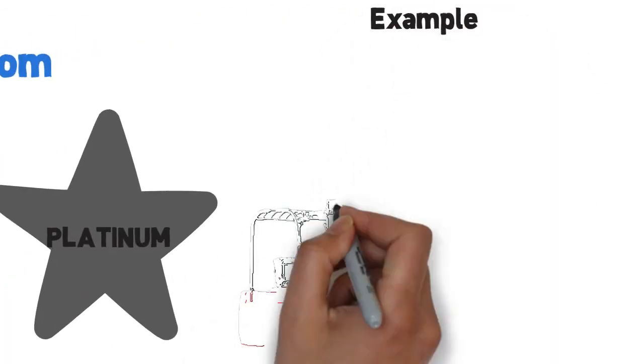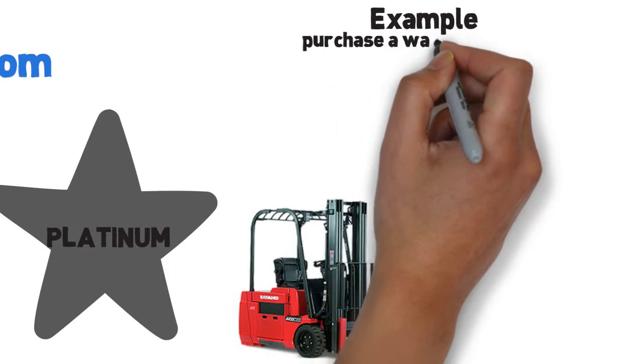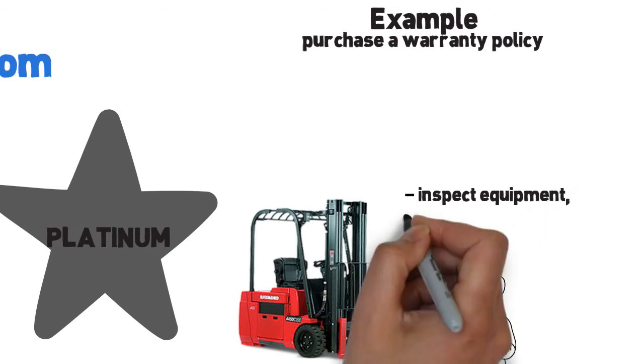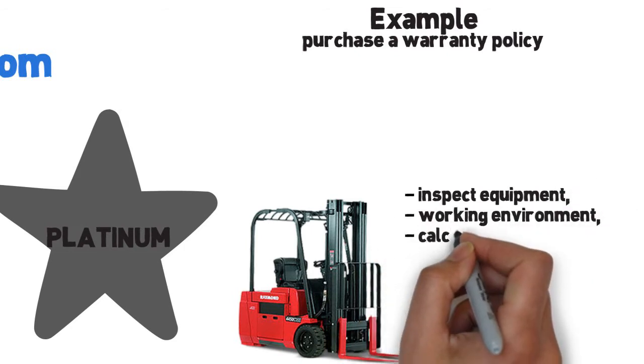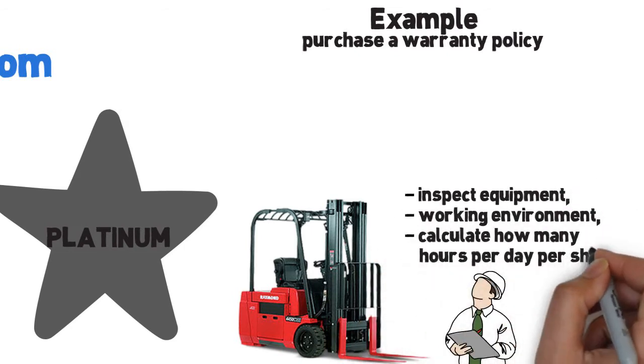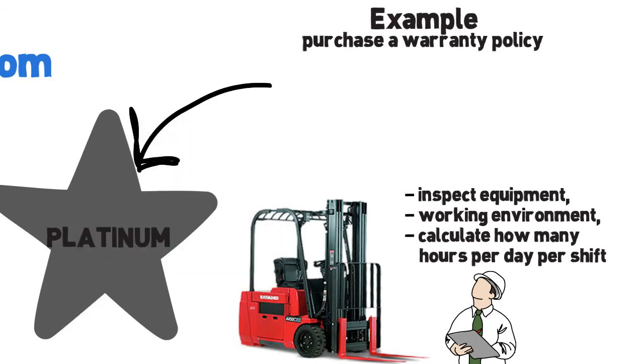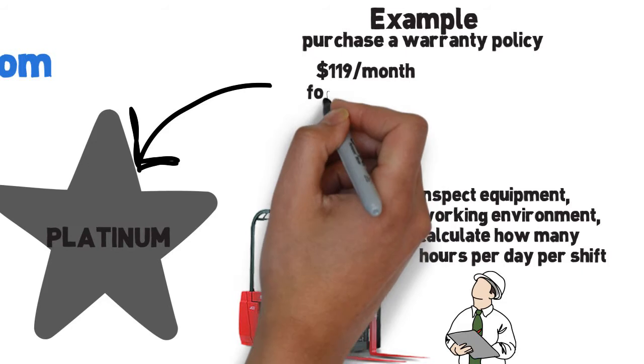Here's an example. You have a Raymond forklift, and you purchase a warranty policy. We send over a certified agent to inspect equipment, working environment, and calculate how many hours per day, per shift. Let's say you purchase a platinum plan policy. For $119 per month, for 24 months,